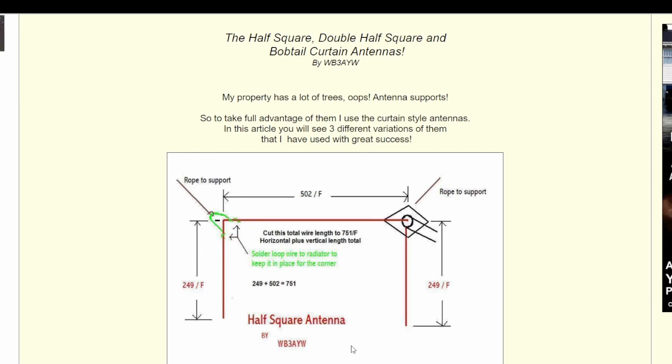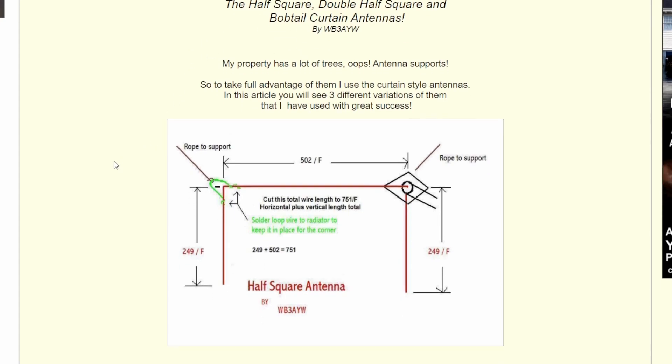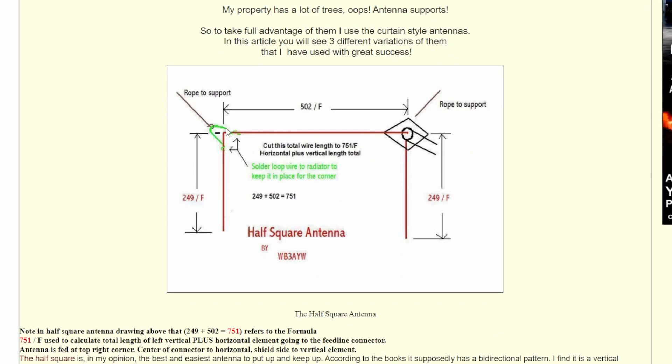Okay, let's just take a look at this. This is hamuniverse.com. Pretty good write up on a half square antenna. It goes into double half square and bobtail curtain. But what we're going to be interested today is this half square. So if you look at the chart here, on the top is your horizontal part. And to get the length of that, you're going to take 502 and divide that by the frequency. And the frequency I'm going to use today is 14.225. I may want to do a little bit of digital work. So I wanted to go a little bit lower than I usually go. And for my top measurement, I came up with 35 feet, three and one half inches.